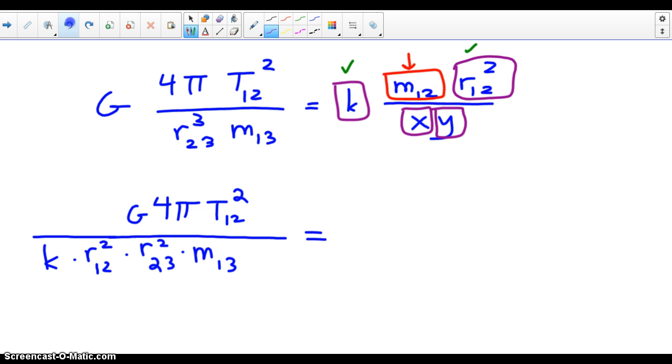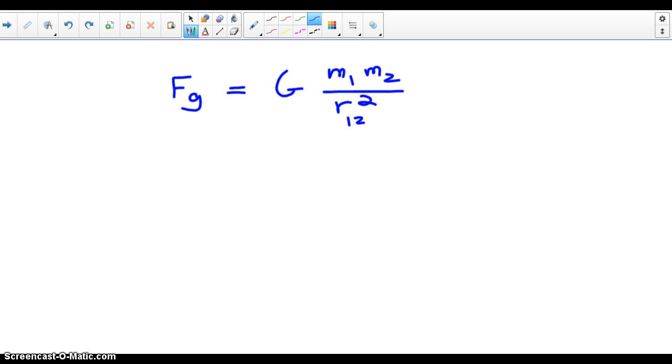So I've taken care of the k and the r 1, 2 squared. Now I have to take care of the x and the y. Those are in the denominator. So they'll simply come into the numerator of the left side. And what's left? Just our m 1, 2.